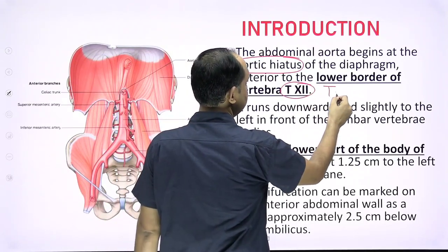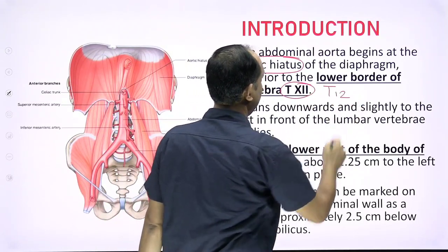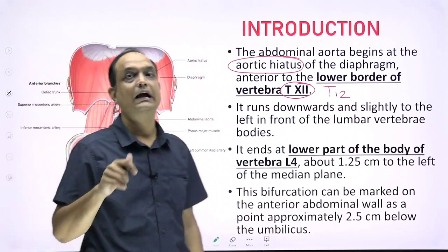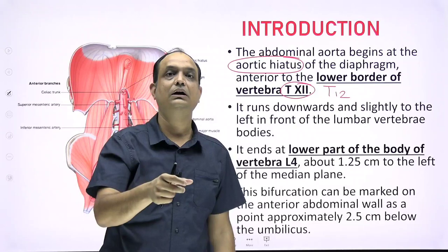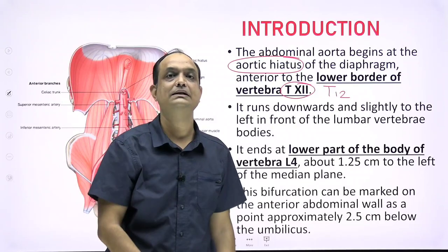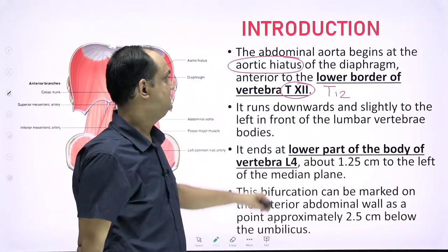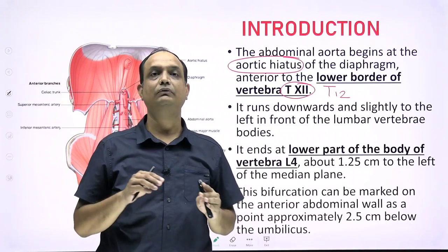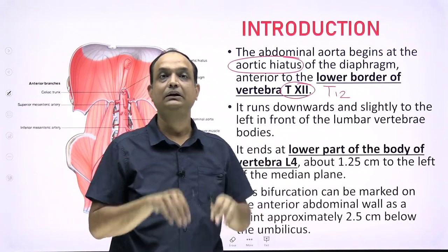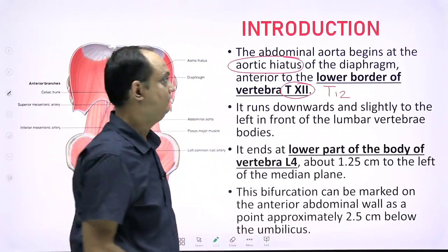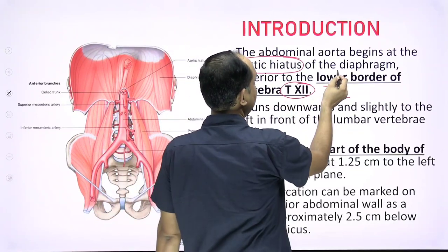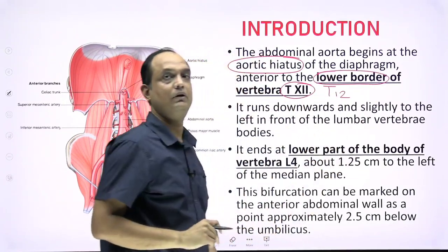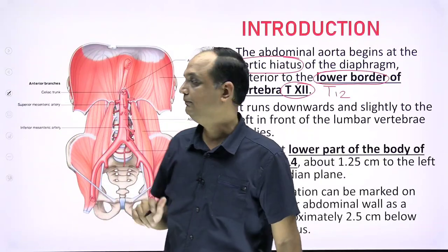When you have a question about at what level the abdominal aorta starts — that is, at what level the thoracic aorta continues as the abdominal aorta — the answer is T12. At this level, the aorta enters the abdominal cavity from the gap behind the diaphragm, more specifically at the level of the lower border of T12.